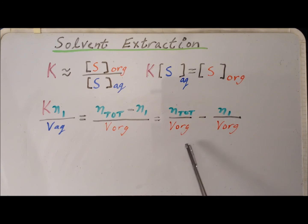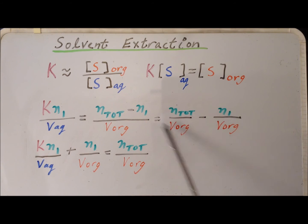Then we use the property of fractions to break this fraction down into the difference of two different fractions. Then we take this version of the equation and simply add N_1 divided by V_org to each side to get this particular expression. And note now that we have N_1 all on one side of the equation and N_tot on the other side.